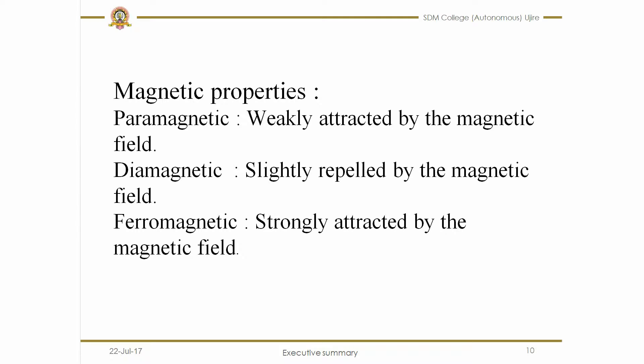Paramagnetism is due to the presence of unpaired electrons, and diamagnetism is due to the presence of paired electrons.